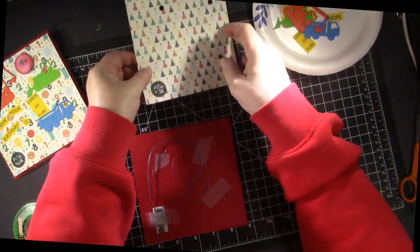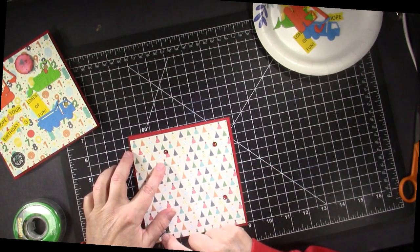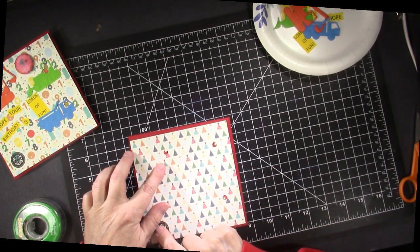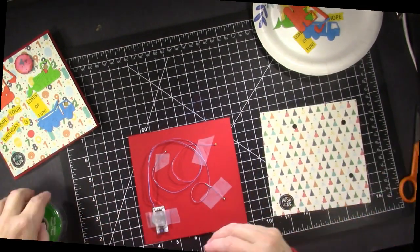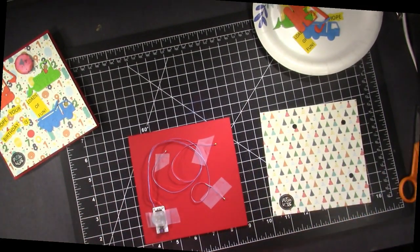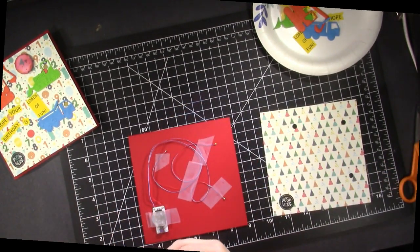And then if we put our paper over and push, you can see that those are going to show. And now we're going to just take some more tape and carefully tape down the excess wire.